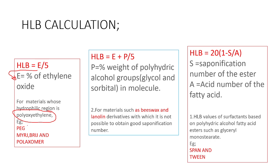The polyoxyethylene-containing surfactants include polyethylene glycol, Tween, Brij, and poloxamer. For these four kinds of surfactants, we can use the formula HLB = E/5.